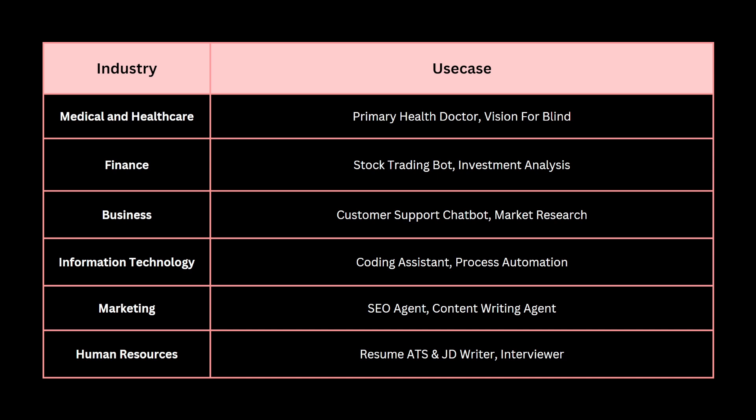In information technology, the first use case is a pair programming or coding assistant, helping remove tedious tasks like rewriting repetitive code or searching Stack Overflow documentation. Another use case is process automation — for example, using an LLM for web scraping or automating repetitive daily workflows. Those are the two use cases in information technology.